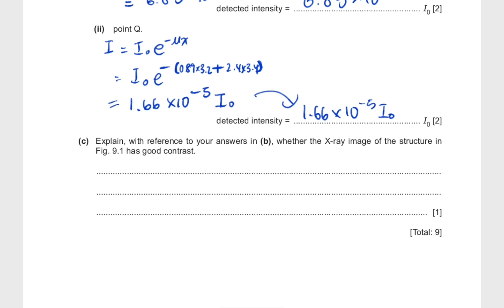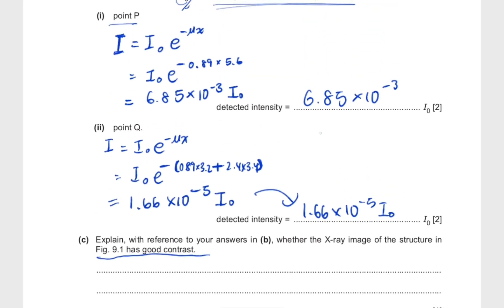So final part of this question: explain with reference to your answers in B whether the x-ray image of the structure in figure 9.1 has good contrast. A big theme in x-ray questions is always about contrast. The definition of contrast is there is a big difference in the dark parts of an image and the light parts of an image. And the bigger the difference between the detected intensities are, the better the contrast is. Because if something is much more intense than another section, you can clearly see the lines or the defined structure of the bone.